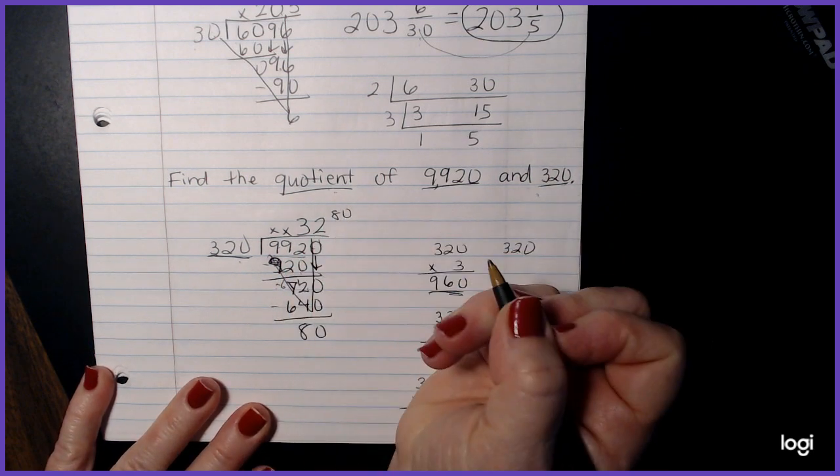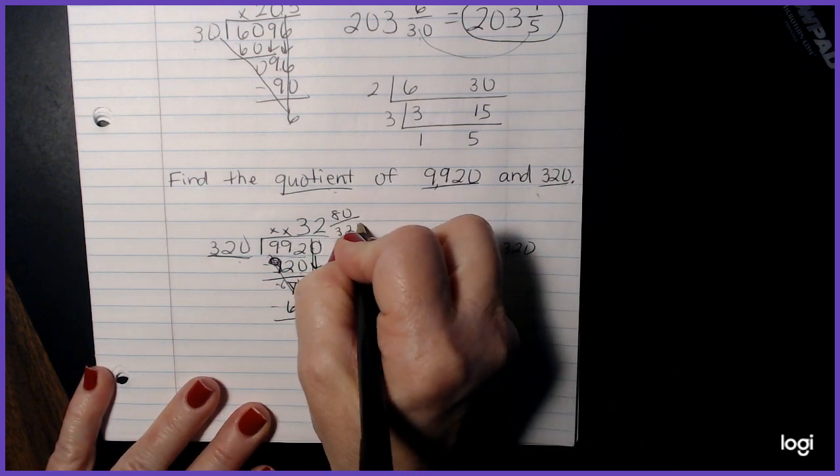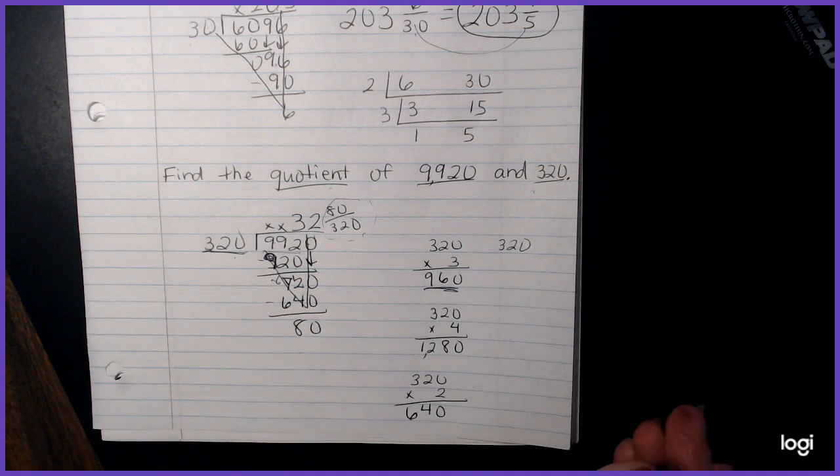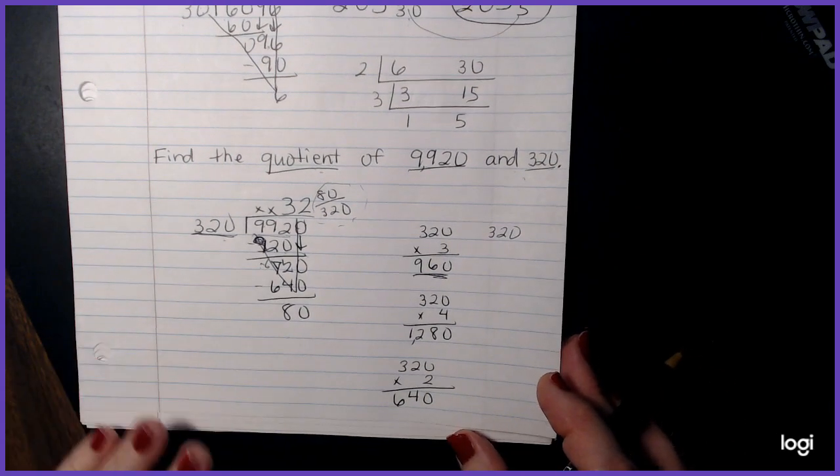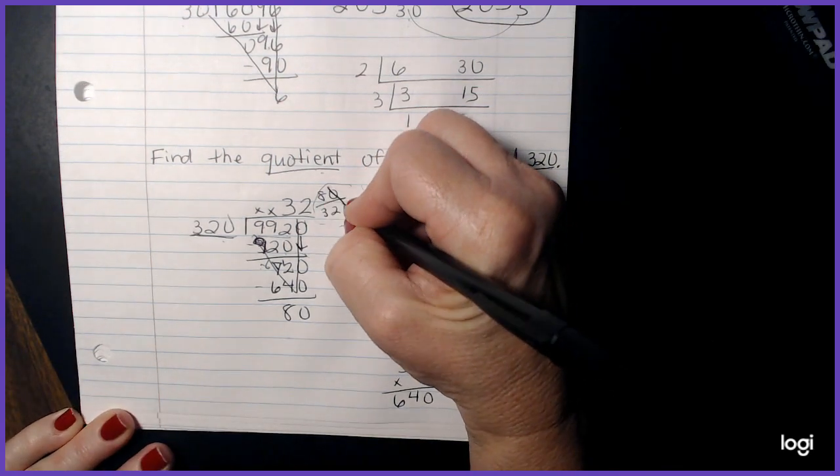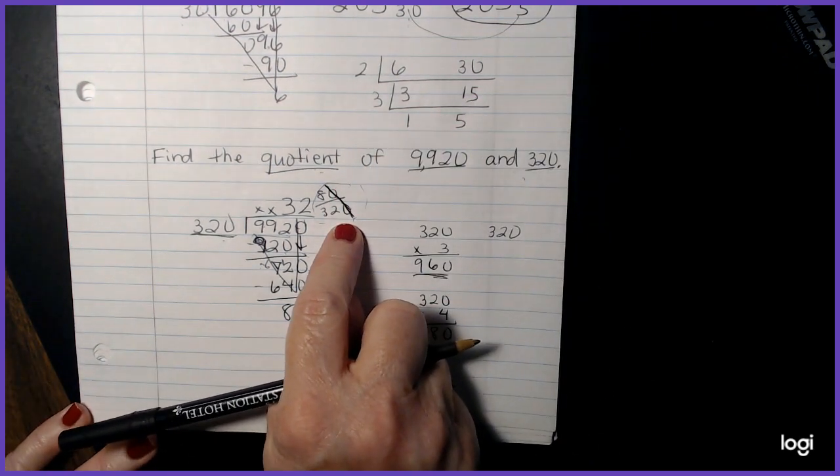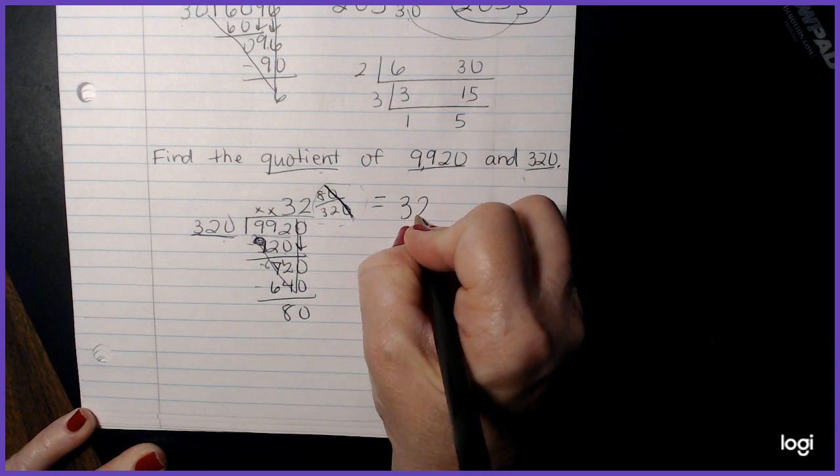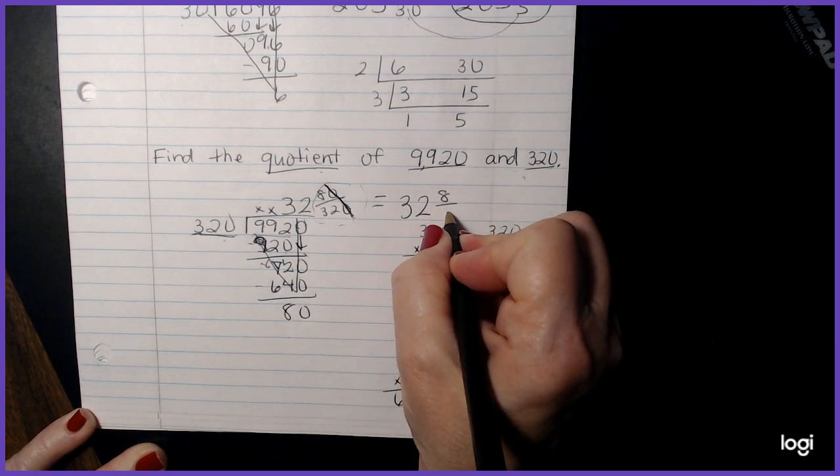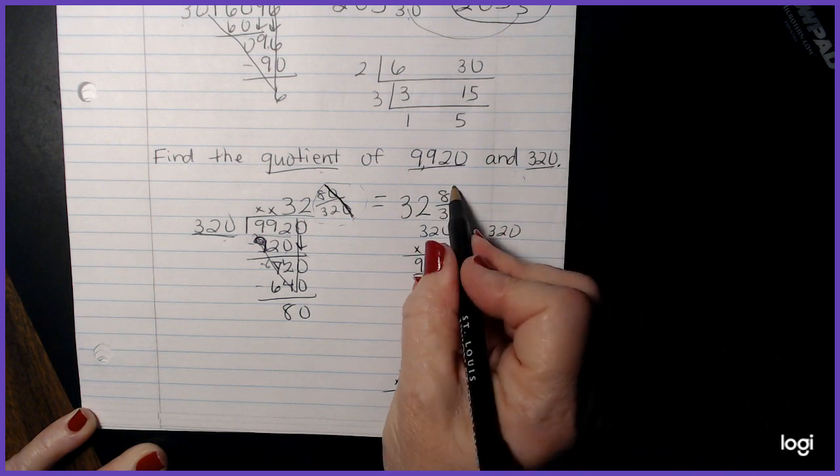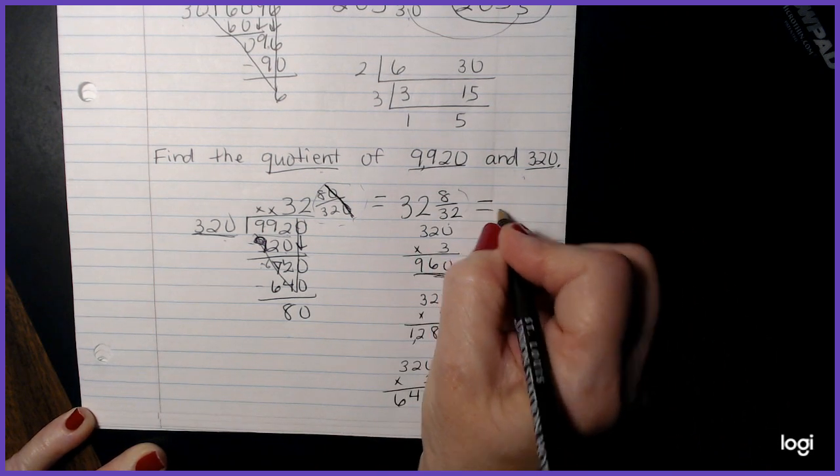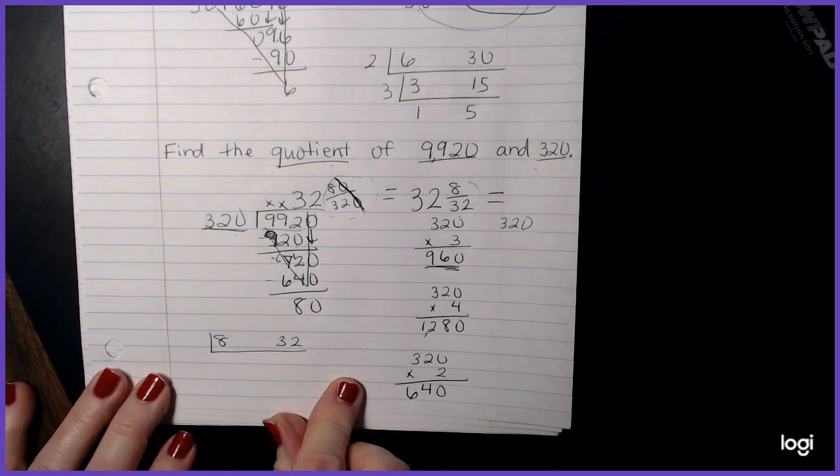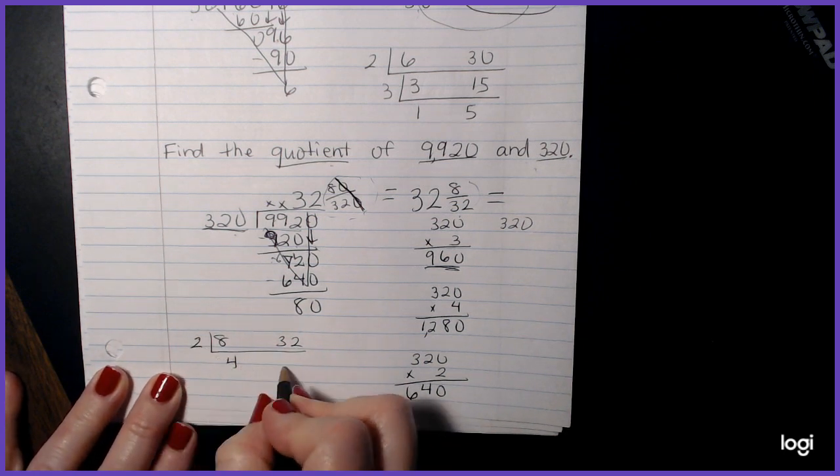Now I know that this large fraction here can simplify. First thing I'm going to do is because they both have zeros in it, I can cancel it by basically tens. I can only cross out numbers like this if they both end in a zero and a zero only. So now I have an answer of 32 and eight over 32. I know that that can reduce. Let's go over here and make our ladder.